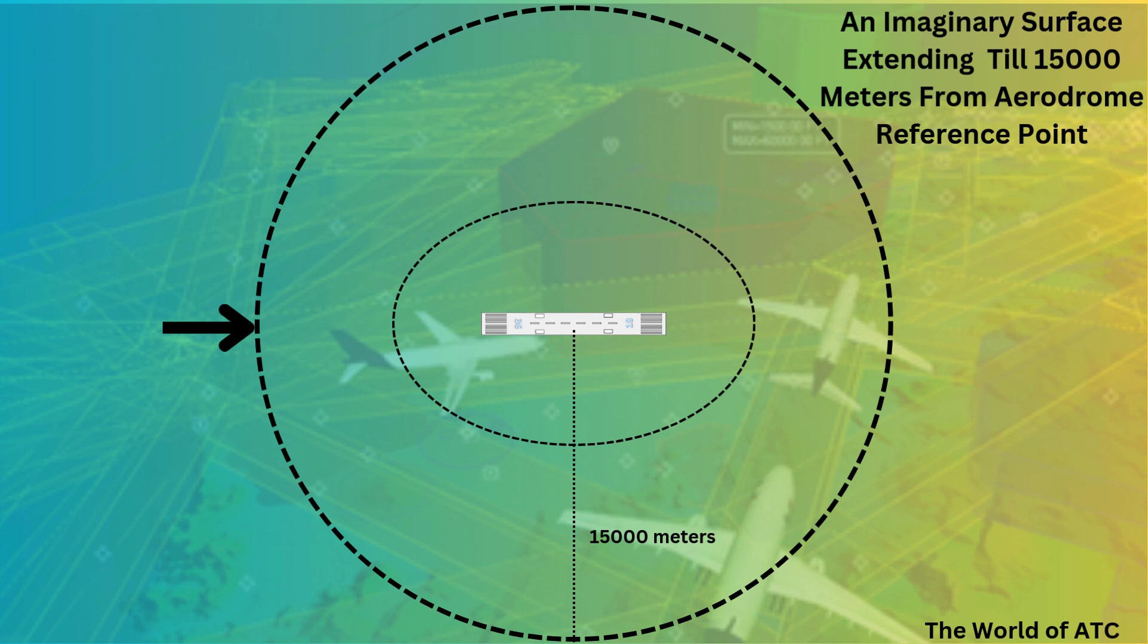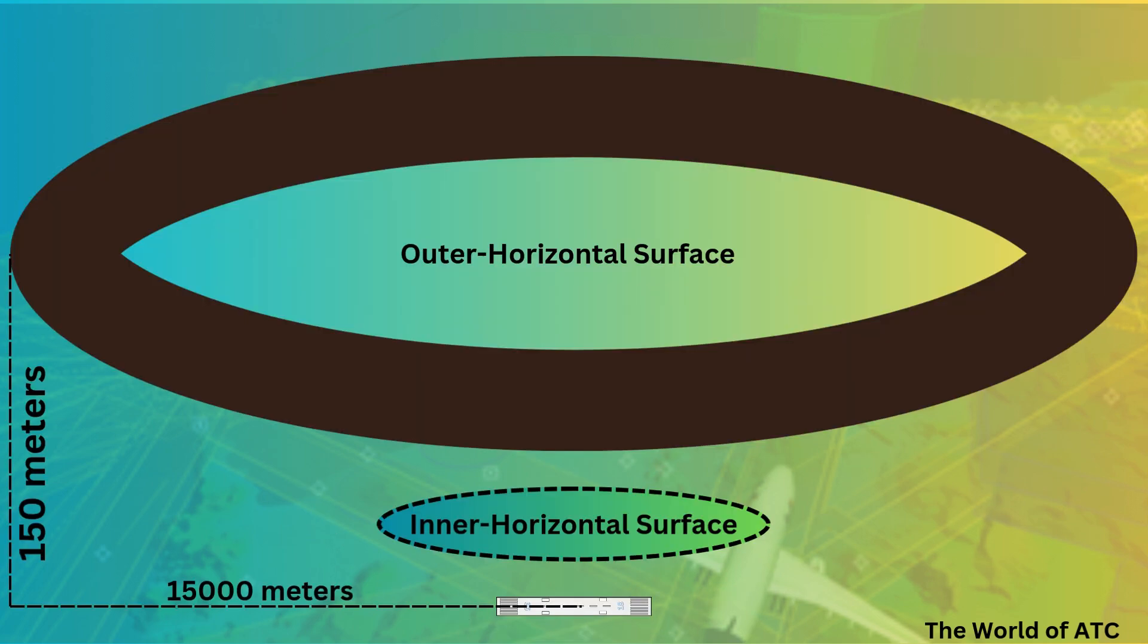So overall, we can say that outer horizontal surface is extended from the aerodrome reference point, which is normally the center of a runway of an aerodrome, and this surface is extended till 15 kilometers.